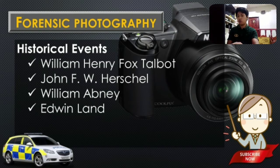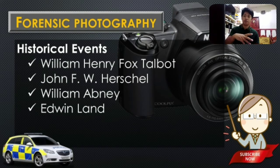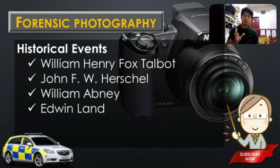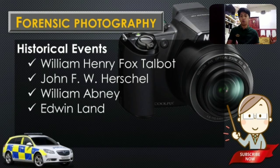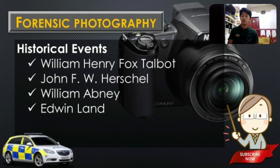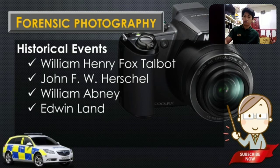We also have John F.W. Herschel — the first person who coined the term 'photography.' Before him, the process of producing photographs was called many things — Daguerreotype, heliograph, and other terms — but not yet 'photography.' He also introduced the terms 'negative' and 'positive,' and pointed out that an image can be made permanent by dissolving away unexposed silver compound with a solution, focusing on the development process.